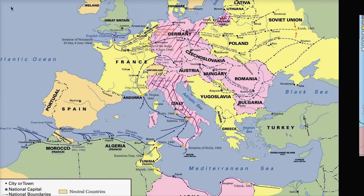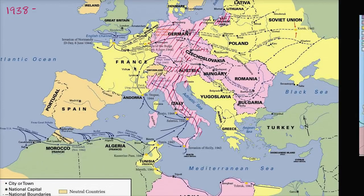In 1938, you have the Anschluss — the unification with Austria — and you also have the German takeover of the Sudetenland in Czechoslovakia. This is the famous moment where the rest of what will be called the Allied powers kind of say, okay, maybe Hitler's just going to do that. We don't want to start another war — we still remember World War I. And so they appease Hitler, and he's able to satisfy his aggression. So in 1938, Austria and the Sudetenland are taken over by Germany.